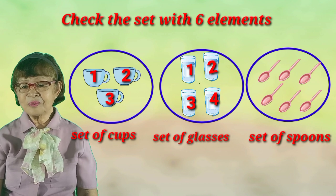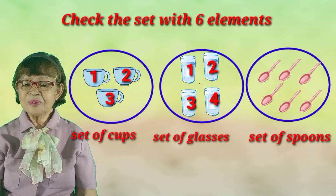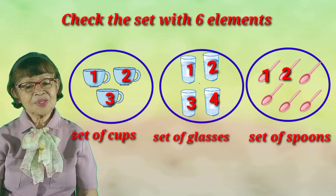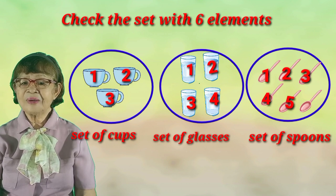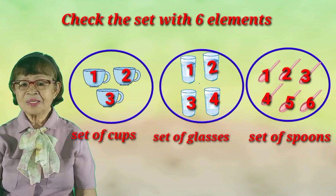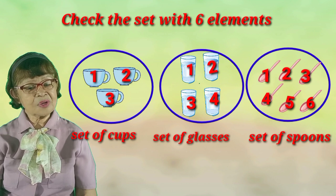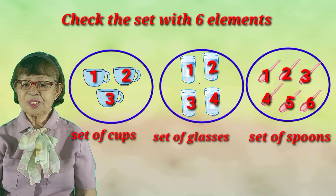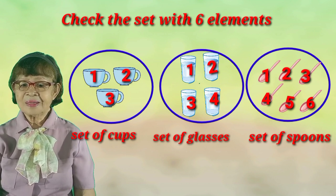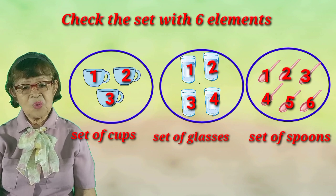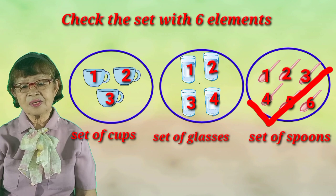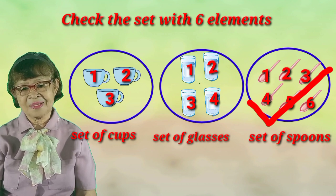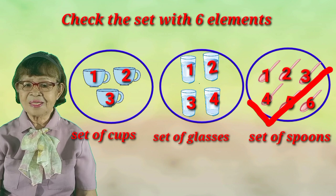Now let's go to the set of spoons. Let's count the spoons: 1, 2, 3, 4, 5, 6. This is the 6 elements that we're looking for. So what are we going to do with the 6 elements? The set of spoons, we are going to check it. We're going to check the 6 spoons because it has 6 elements. So we finish with our 6 elements.